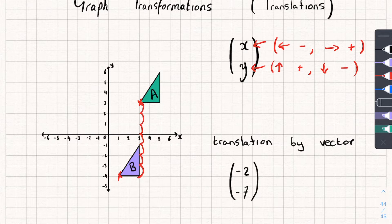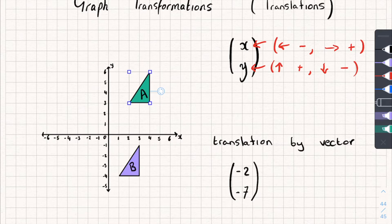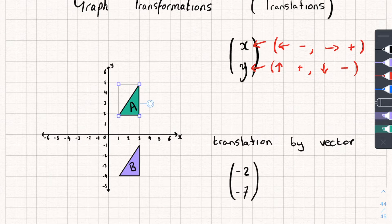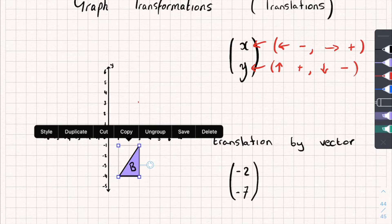And you could even check it for yourself if you wanted to, if I remove this and move the shape. So shape A has moved two squares to the left, so one, two, and then seven squares down. One, two, three, four, five, six, seven. You can see it's the same shape.